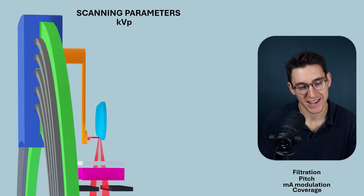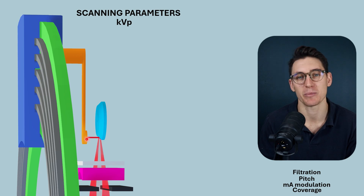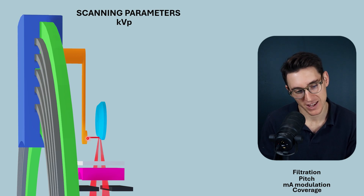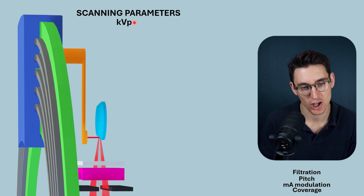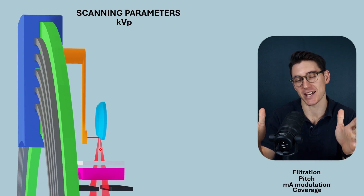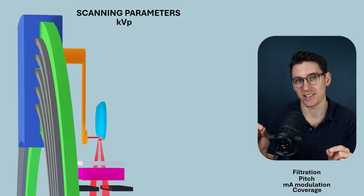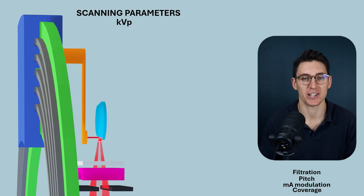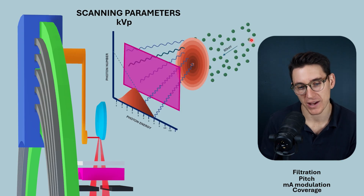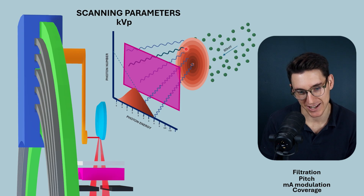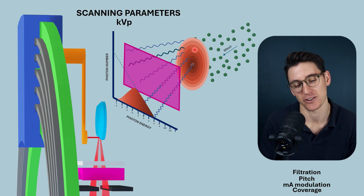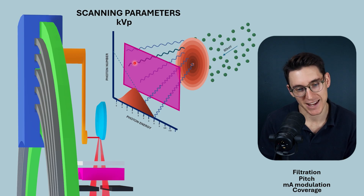Specifically, we produce x-rays by accelerating electrons from the tungsten filament in the cathode towards the anode. The number of electrons and the energy at which they are accelerated between the cathode and anode is determined by the KVP. Those electrons strike the anode and create x-rays in a spectrum consisting of Bremsstrahlung and characteristic x-rays, containing different numbers of x-ray photons at all the different energy levels.